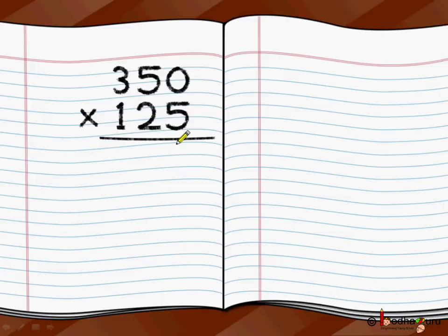We draw an underline below it. How do we do multiplication? Very similar to how we do it by a two-digit number. Here 350 is the multiplicand and 125 is the multiplier. The multiplier is a bigger three-digit number, but we will do it exactly the same way we have learned for two-digit.